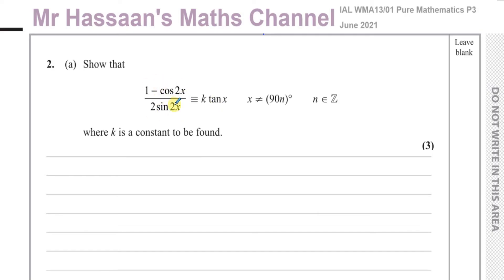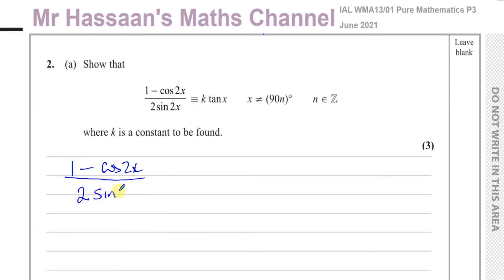So it's one of those identity questions where you have to show how this side becomes that side. We've got 1 minus cosine 2x on top and 2 sine 2x on the bottom. We need to use trigonometric identities to show this becomes some constant times tan x. We have double angles here and a single angle, so this has to involve the double angle formulae.